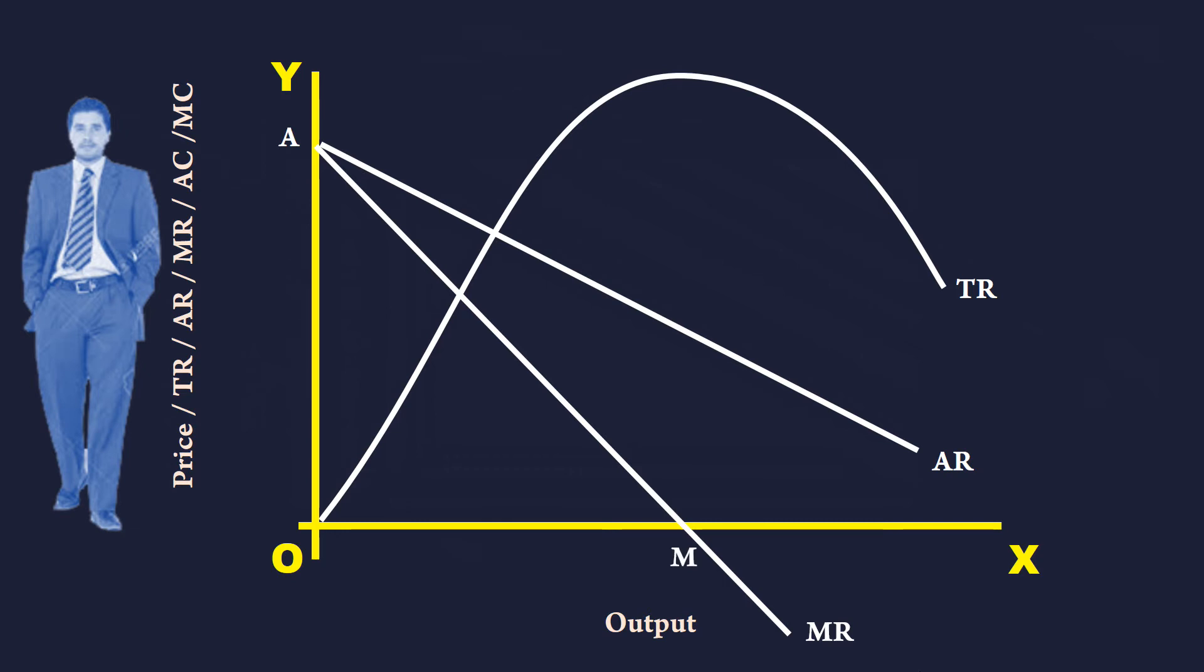It means when output is M, MR is zero and total revenue is maximum. MS is the maximum total revenue. If he produces and sells less or more than this, his total revenue will be less than MS.